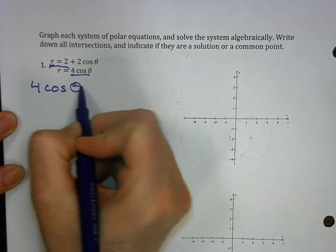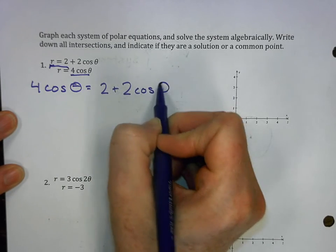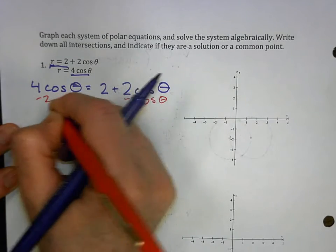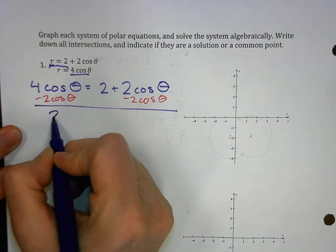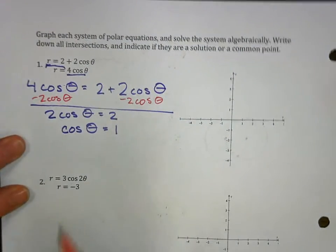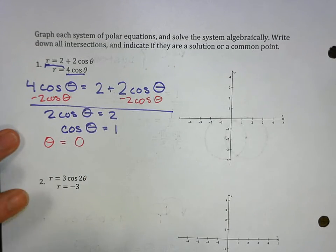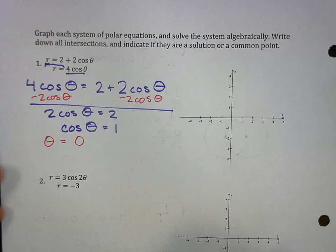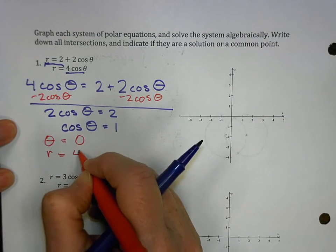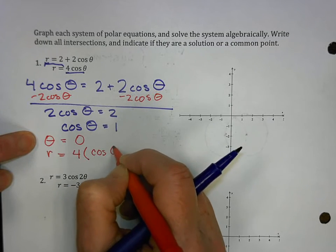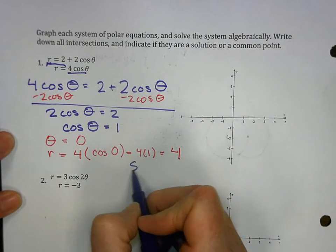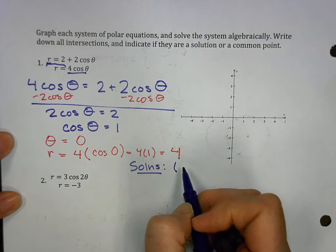Four cosine theta equals two plus two cosine theta. Get everything on one side. I'm going to subtract. And I get two cosine theta equals two. I'm going to divide by the two. Cosine theta equals one. So what is theta? Theta equals zero. I could say zero in two pi, but I begin repeating at two pi. I am going to find r. R equals four times the cosine of theta, which is zero. The cosine of zero is one. So that's four times one, which equals four. So algebraically, I have found one solution, four, zero.